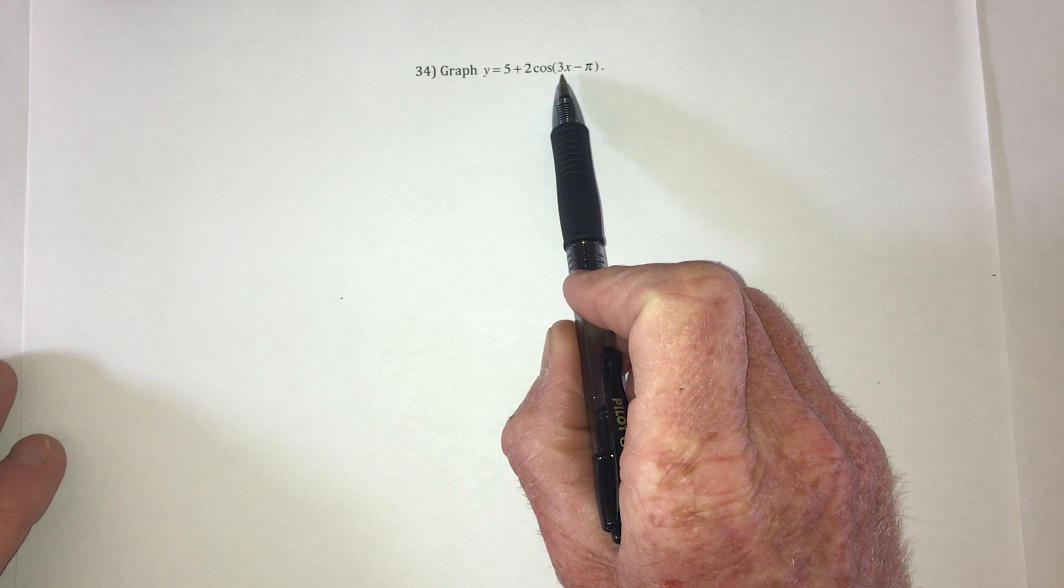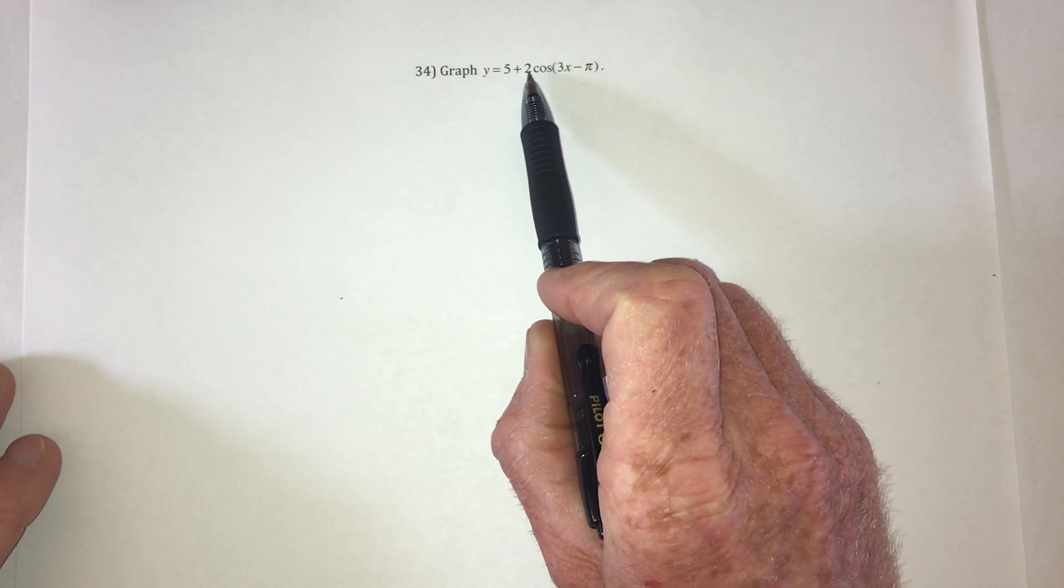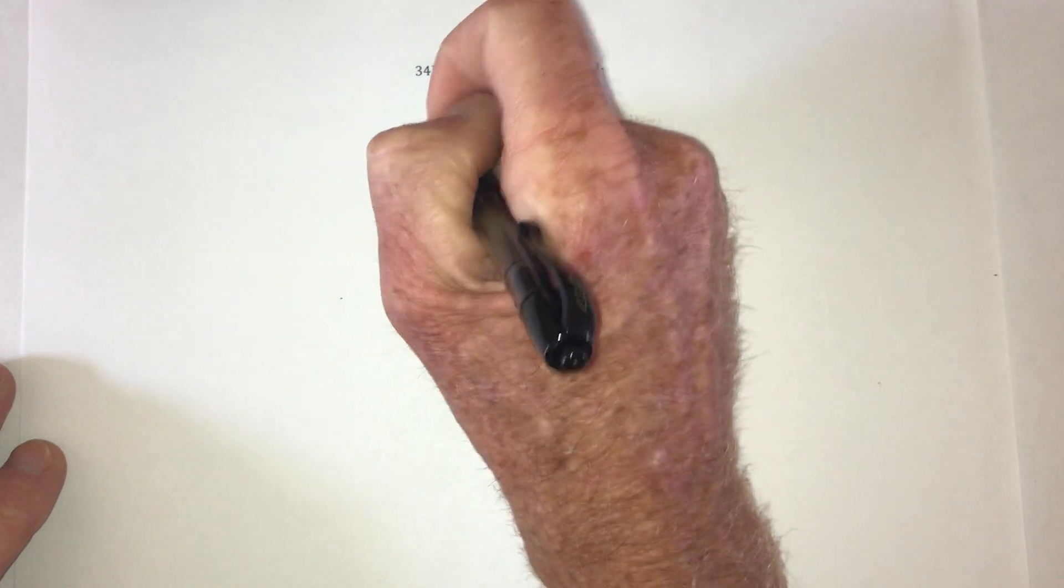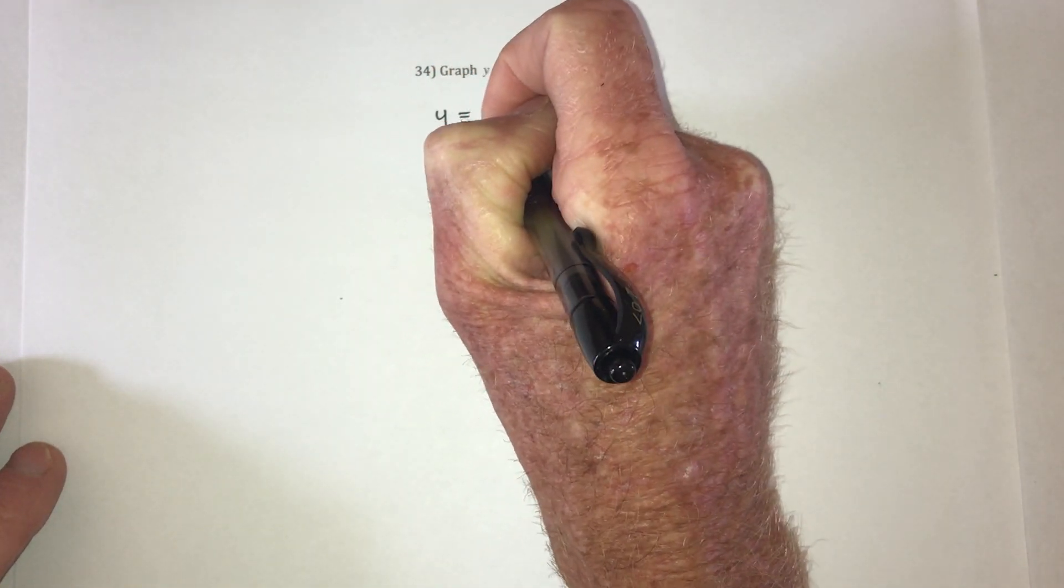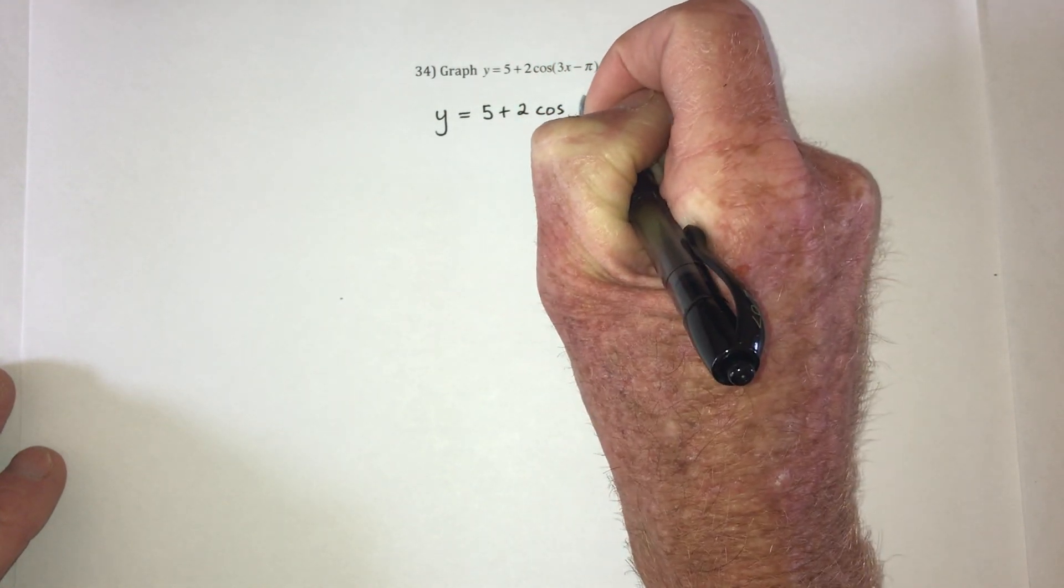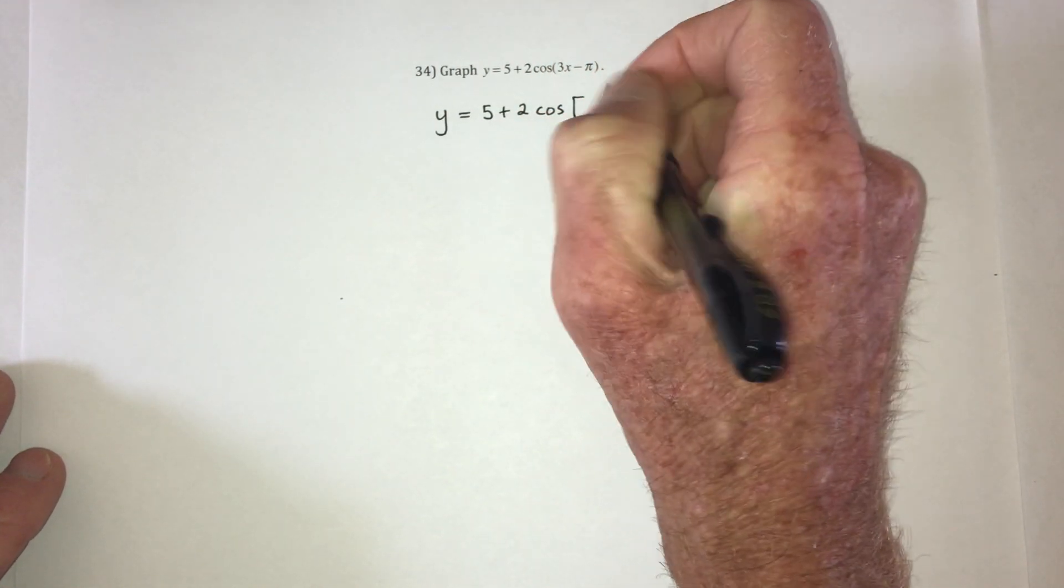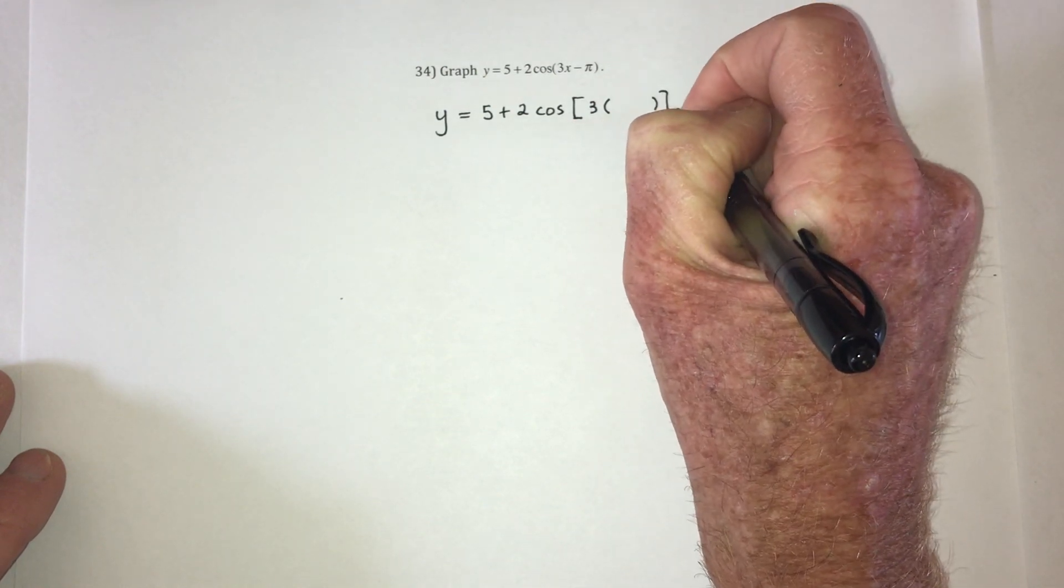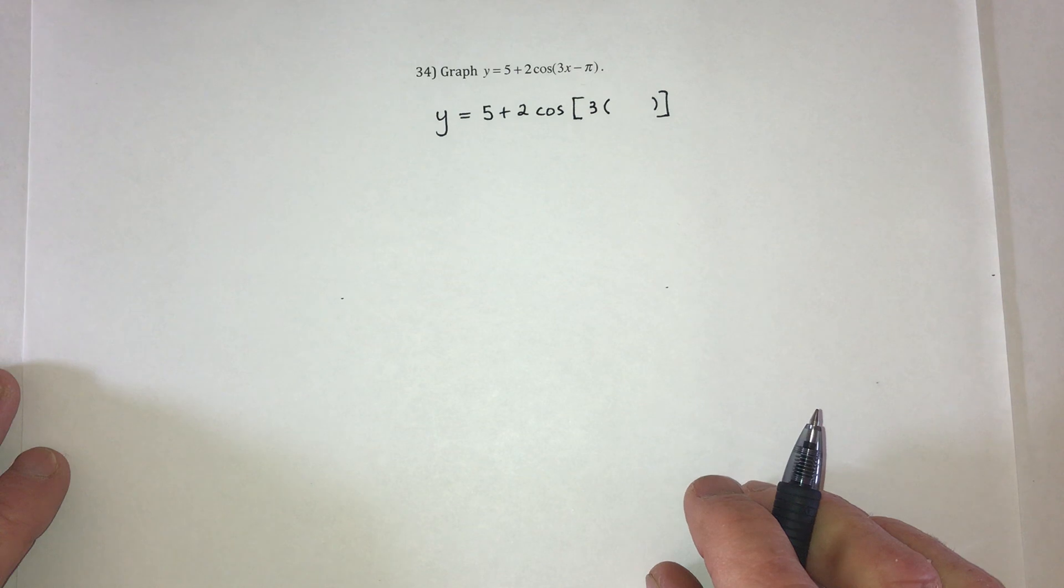Now you can't factor it out to the front of cosine, but you can just factor it out right here. So I'm going to do that part first. y equals 5 plus 2 cosine, and then I'm going to factor out a 3.